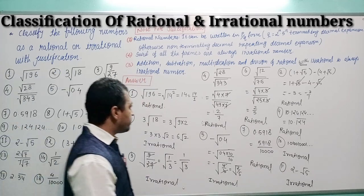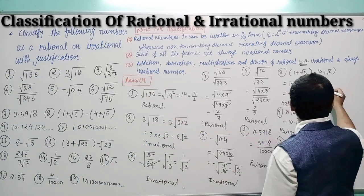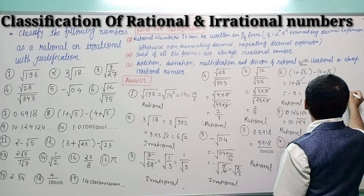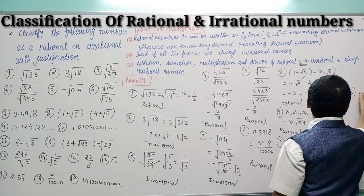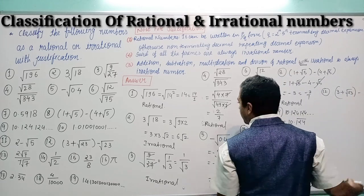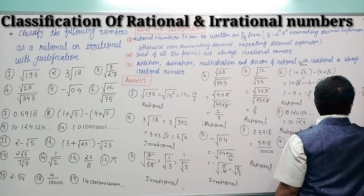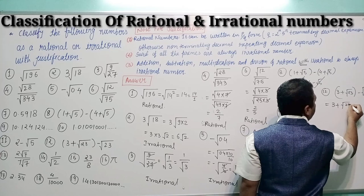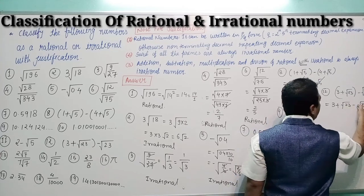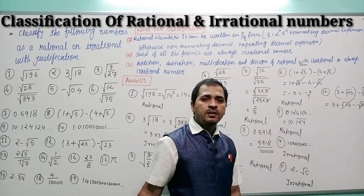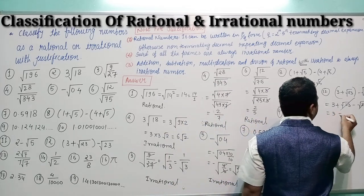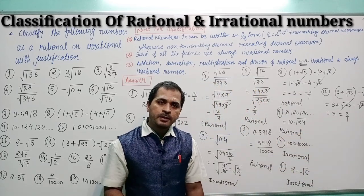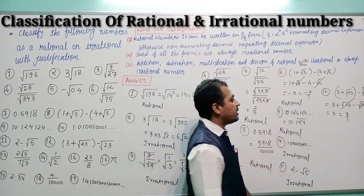Question number 12 is similar to question number 8: (3 + √23) − √23. Removing the bracket gives 3 + √23 − √23. The √23 terms cancel, leaving 3, which can be written as 3/1. It can be represented in p/q form, so 3 is rational.